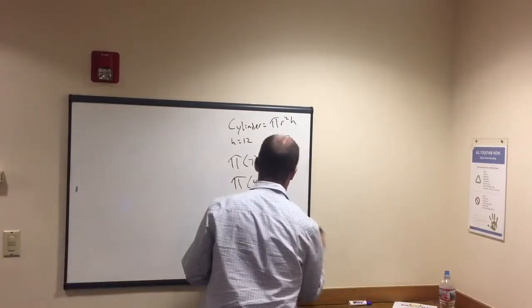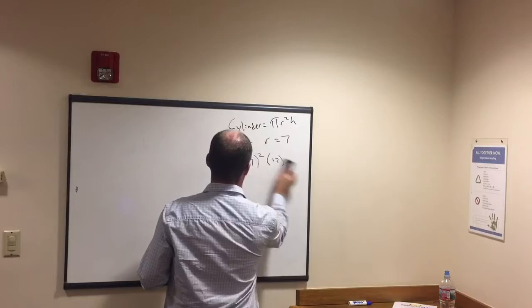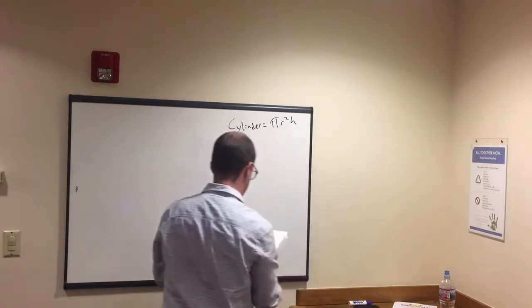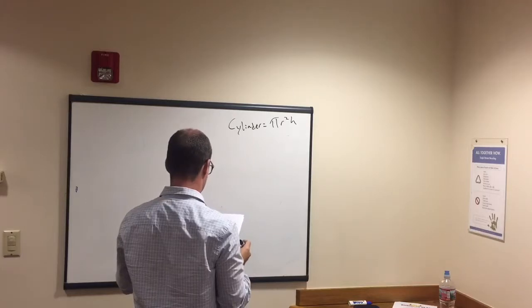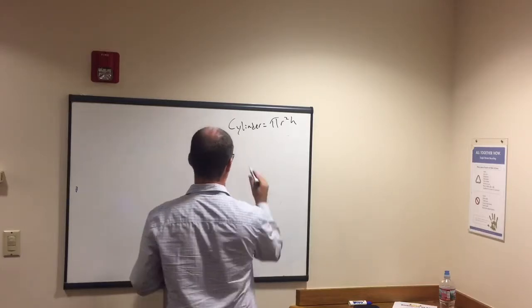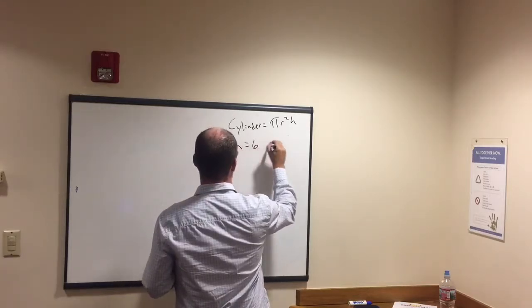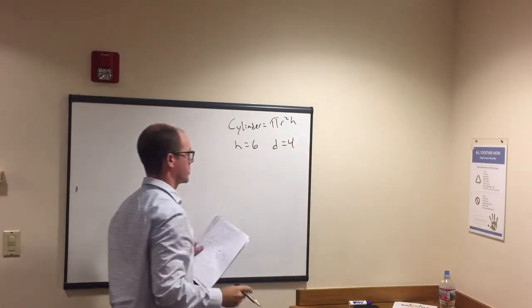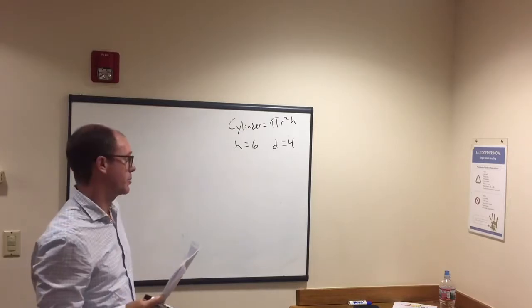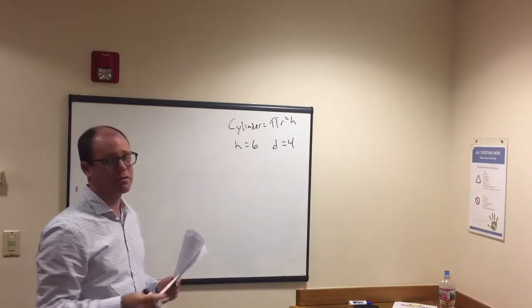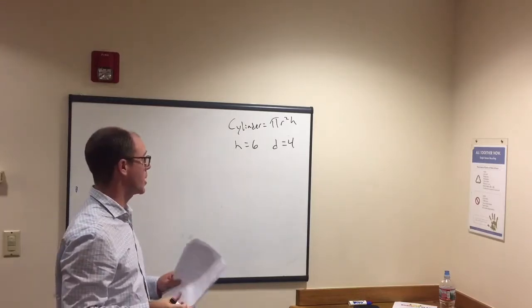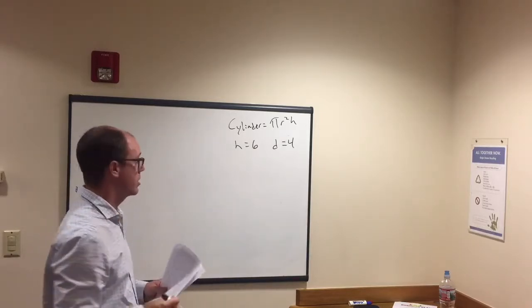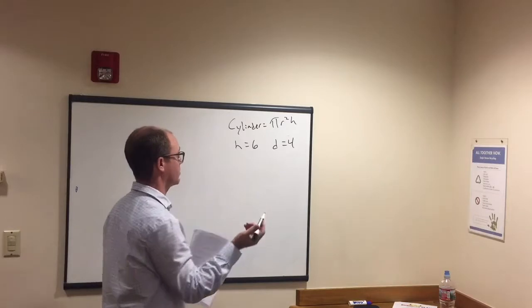We want to do another example. Just make sure we're comfortable with the cylinder. So what if it said height equals 6, instead of radius, they give you a diameter. Diameter is 4. Okay, so this will happen a bunch, where they'll give you diameter and you're solving for radius. It's in circle problems, but it'll show up elsewhere, like for volume or surface area.